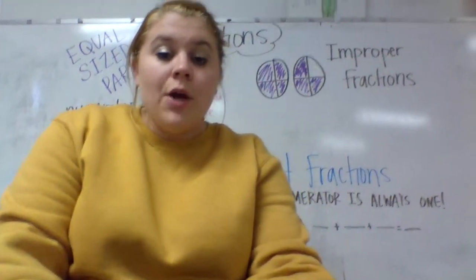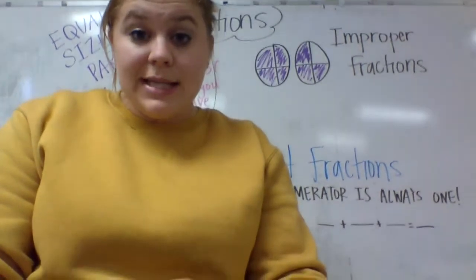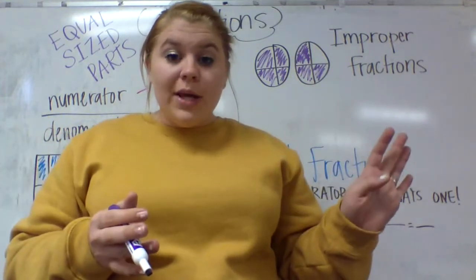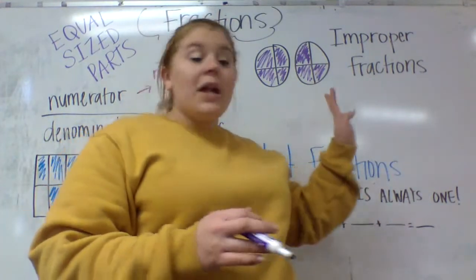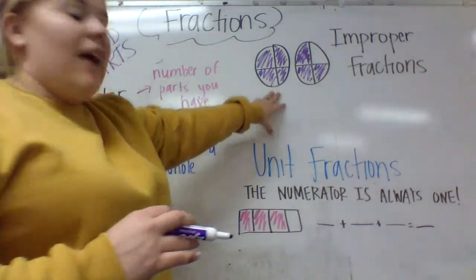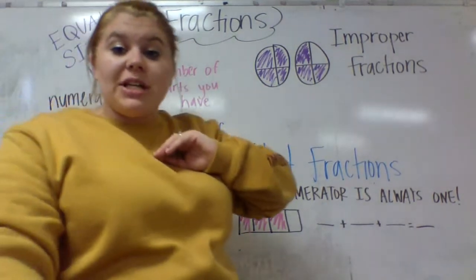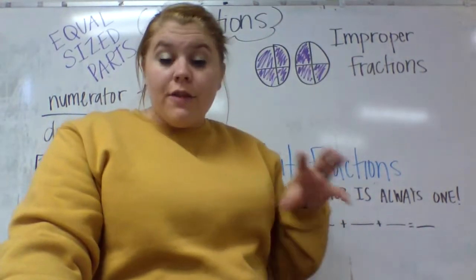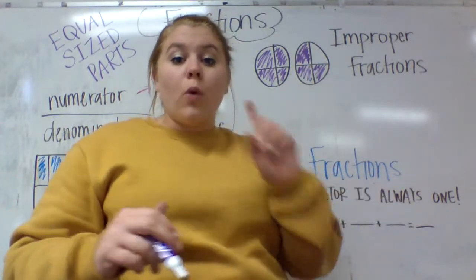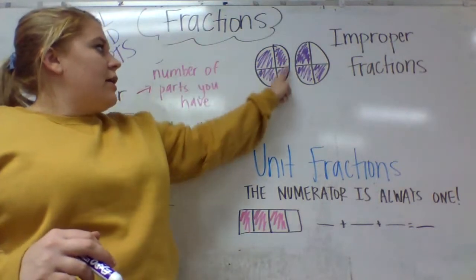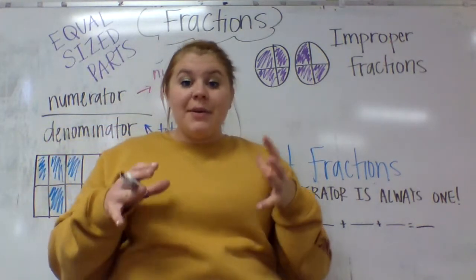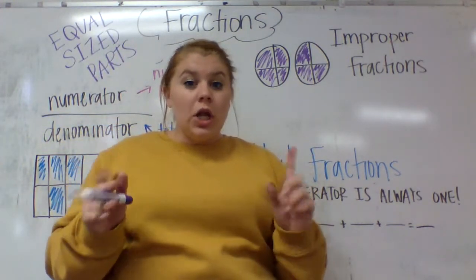Now we do have what we call improper fractions. I always like to tell my kids we don't like dealing with improper fractions — we're going to learn how to get rid of them in a couple of weeks. We don't like improper fractions because we're proper people. But we have to know what they are. Improper fractions are when your numerator is greater than your denominator — your number on top is bigger than your number on bottom. That happens when you're representing more than one whole.